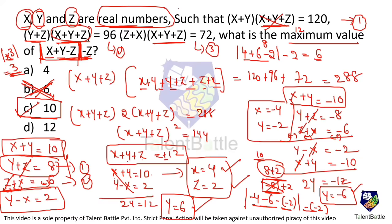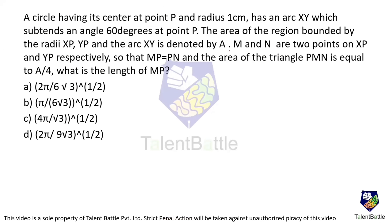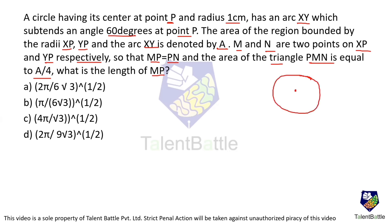New problem: a circle with center P and radius 1 cm has arc XY subtending 60° at P. The area of the region bounded by radii XP, YP, and arc XY is denoted A. Points M and N lie on XP and YP respectively such that MP = PN, and the area of triangle PMN equals A/4. Find the length of MP.